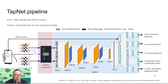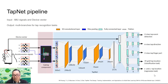This is the TapNet pipeline. Its input includes IMU signals and a device vector, where the device vector indicates the IMU install location as well as the phone size. The core of TapNet is a multi-layer convolutional neural network with multiple convolutional layers, max pooling, and for each output branch, multiple fully connected layers.